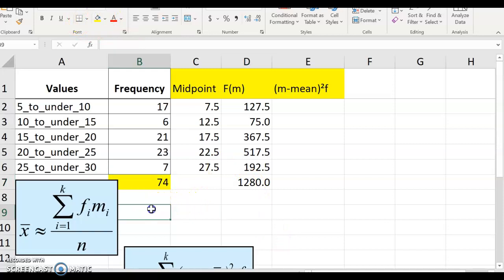And then, so our mean, and I'm going to label this mean, is going to equal the sum of the frequencies times the midpoints, which is the 1280, divided by n. So now we have our mean.